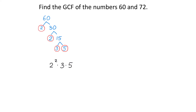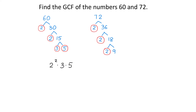Next, we will find the prime factorization for 72. 72 divided by 2 is 36. 36 divided by 2 is 18. 18 divided by 2 is 9. And 9 divided by 3 is 3. Then, the prime factorization for 72 is 2 cubed times 3 squared.